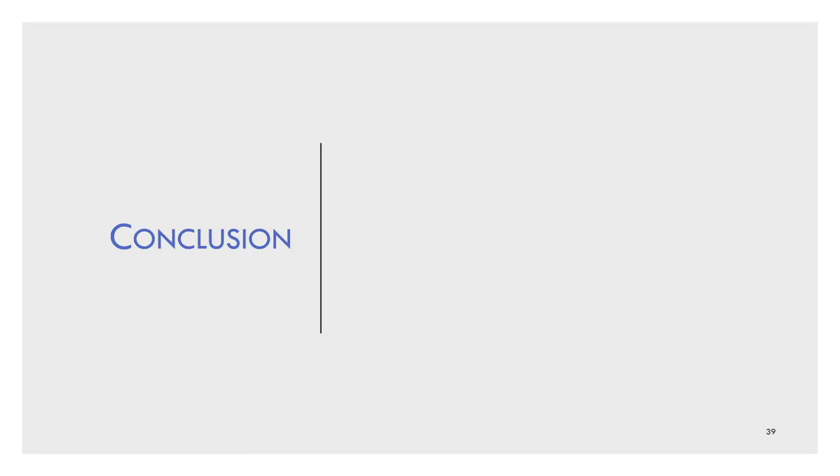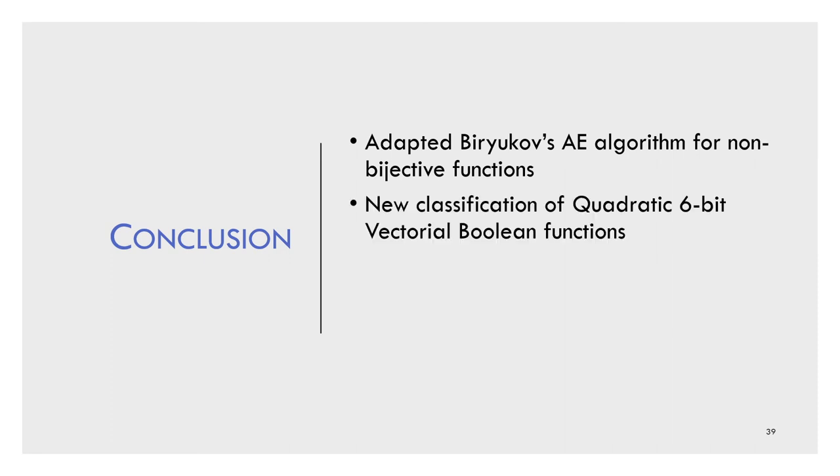In conclusion, we adapted the affine equivalent algorithm to be suitable for non-bijective functions, which allowed us to optimize the methodology for classifying vectorial Boolean functions. We were able to create the first exhaustive classifications of quadratic vectorial Boolean functions on 6-bits, both bijective and non-bijective. Even though these classifications are limited to quadratic functions, they're very useful since recent implementations with side-channel security or multiparty computation are much more efficient for quadratic functions.